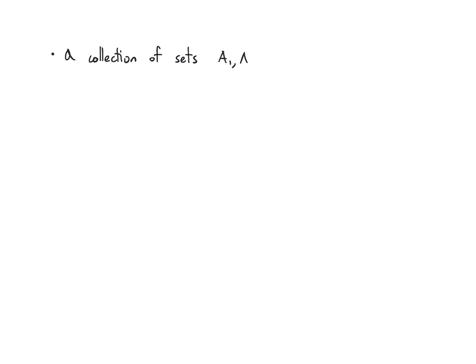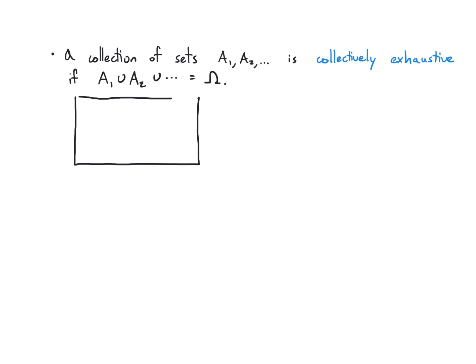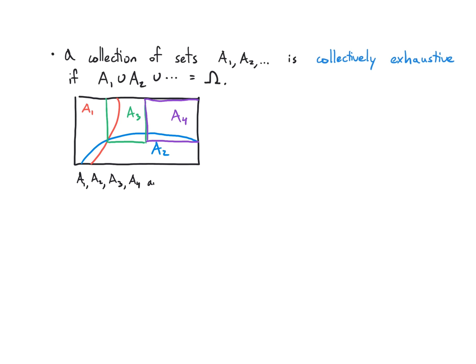A collection of sets is collectively exhaustive if, when I take all those sets together and take their union, I end up covering the whole space — the universal set. Visually, if I have four sets and they cover the entire universal set rectangle, then A1, A2, A3, A4 are collectively exhaustive.